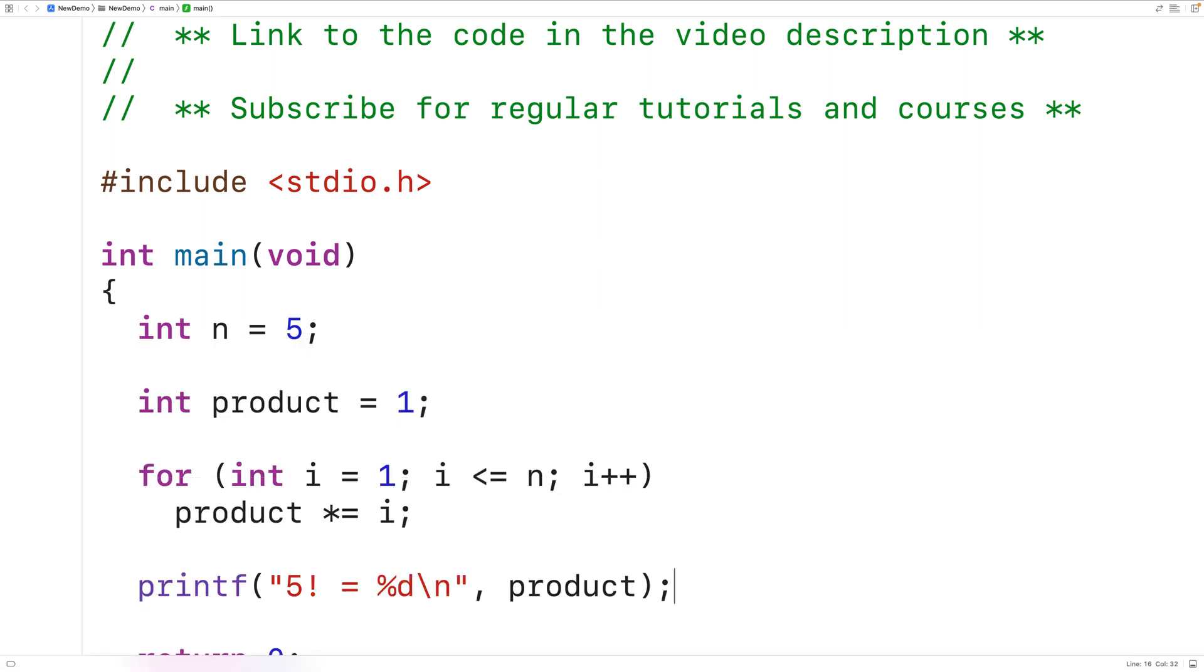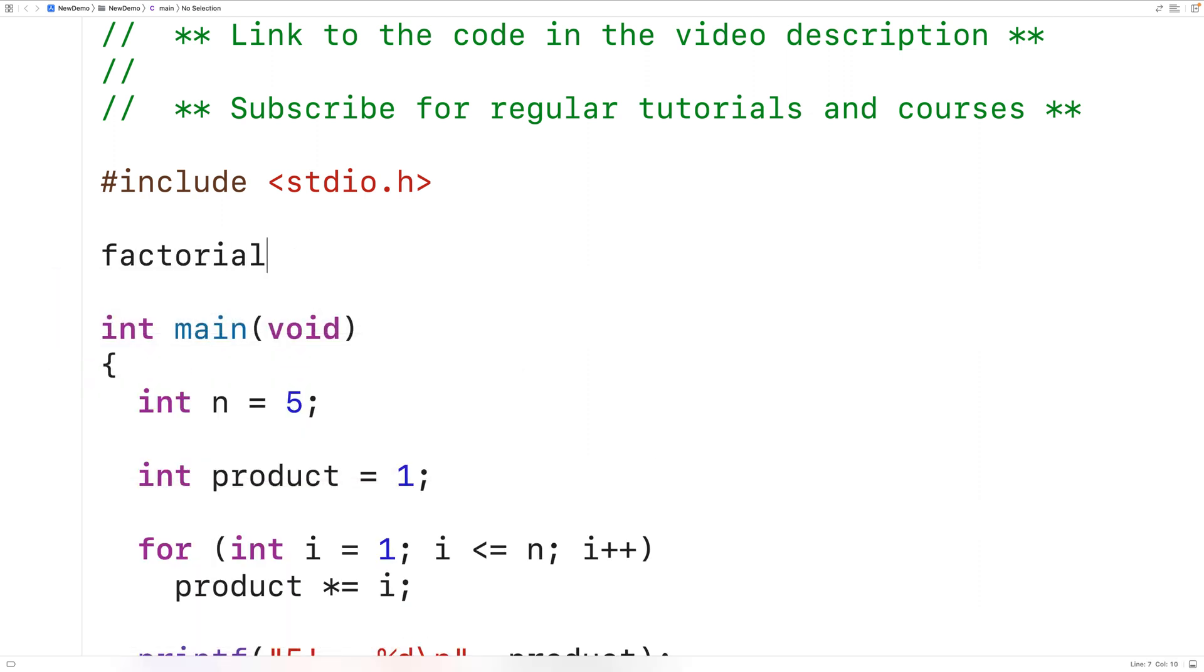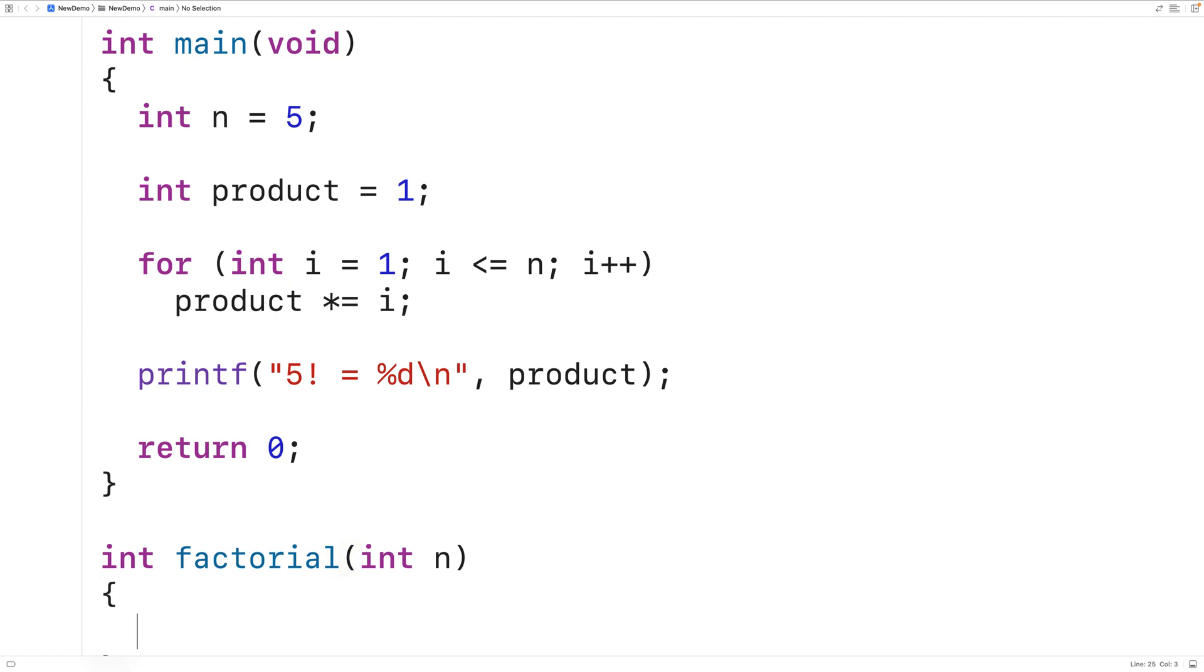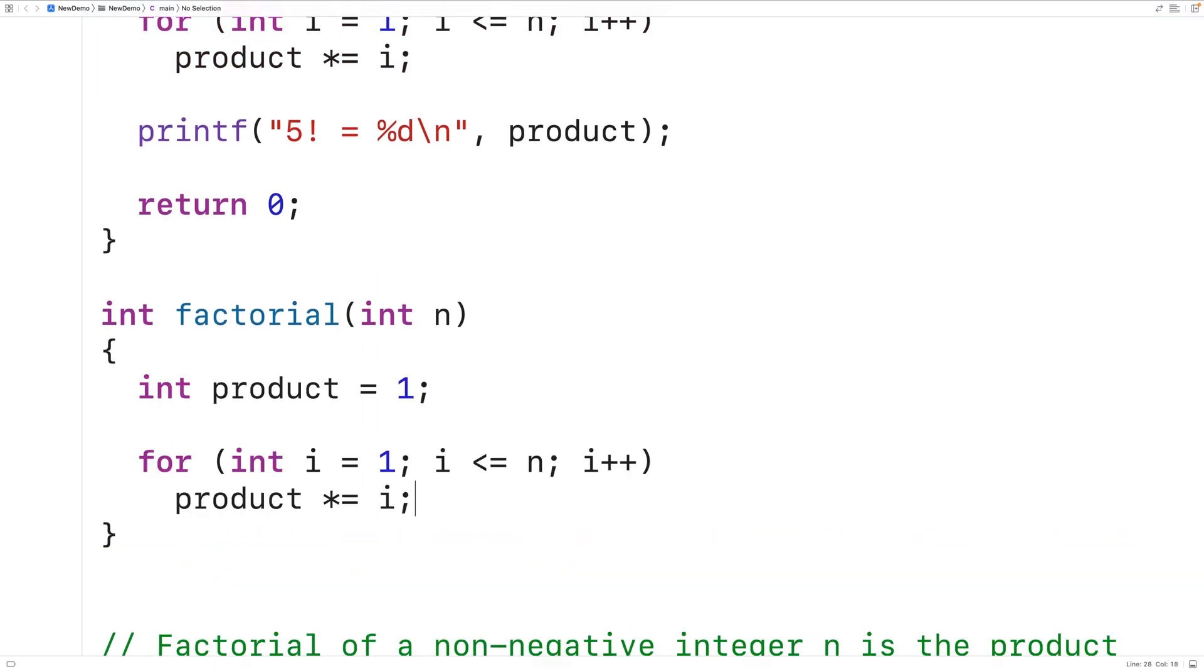One thing we may want to do is put this code to calculate the factorial of a number inside a function. We could have a function called factorial, and that function could return an int value, the calculated factorial. And the function could accept the integer n as an argument. We could provide a definition of the function down here. So what we could do is actually copy this code here. We'll copy this part of the code here into the function. And we're going to calculate the factorial exactly as we did in the main function, but this time we'll be using the function parameter n for our n value.